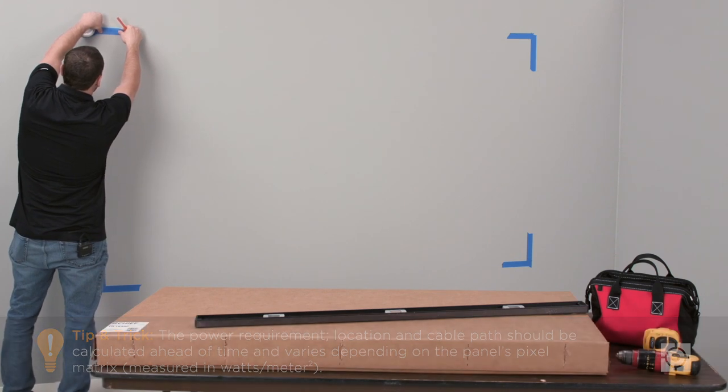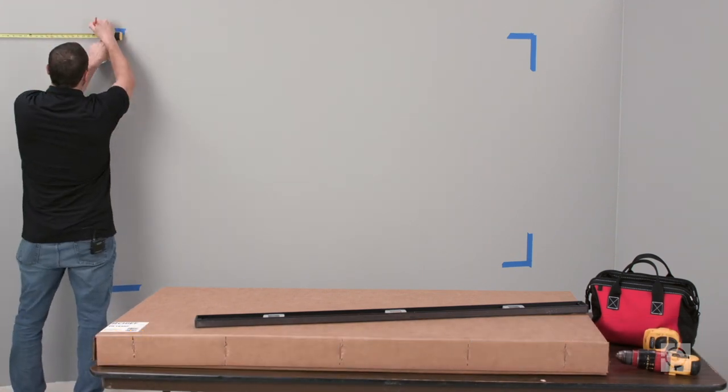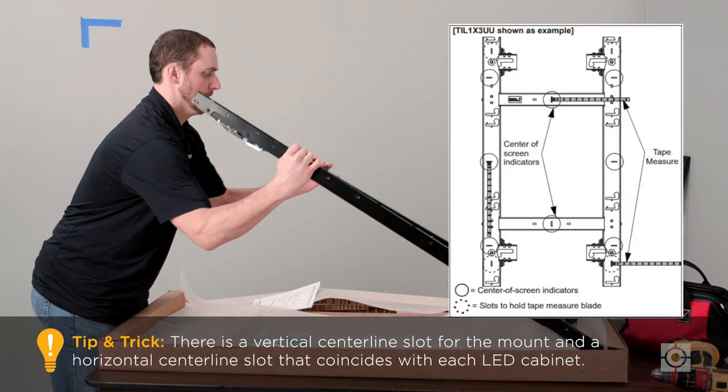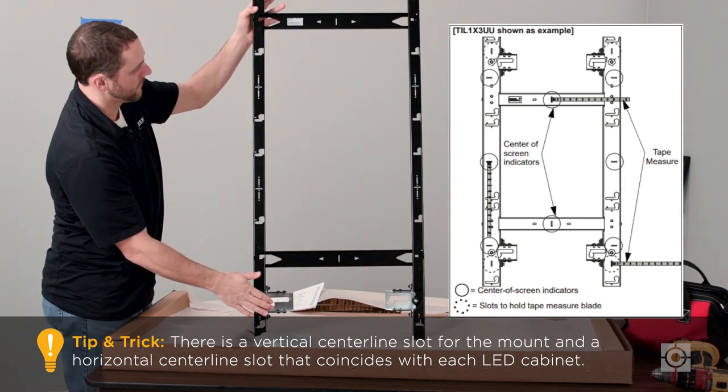Additionally, the installation and layout drawings can be used to determine where power may be located behind the video wall. The Chief drawings provide references to the vertical and horizontal center line of the LED displays. These measurements coincide with slot references built into the mounting system itself, allowing for faster and easier installation.